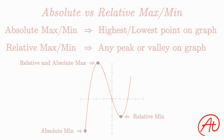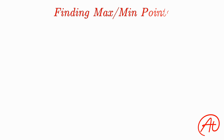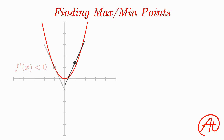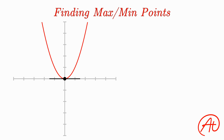Now that we've covered what maximums and minimums are, let's discuss how we find them. Let's look at a graph with a relative minimum. Using the calculus skills we've learned so far, a defining feature of this minimum is that, looking at the slope of the curve around the minimum point, to the left the curve has negative slope, and to the right it has positive slope. But right at the minimum, the slope is completely flat and exactly equal to zero.